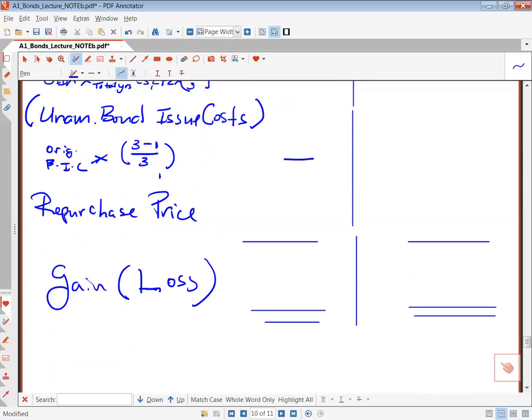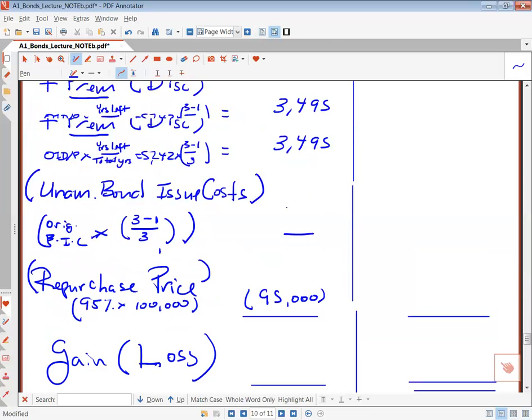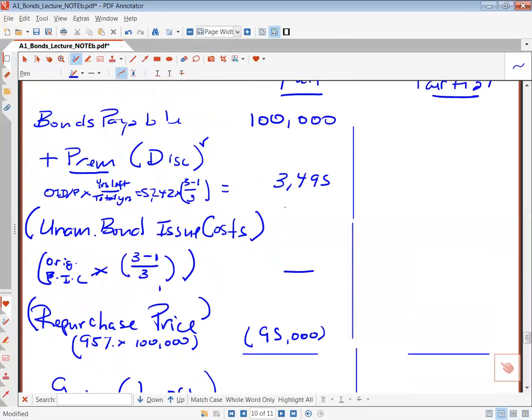And then the repurchase price for the full is just the quote, in this case, 95%, times $100,000, and it's a reduction. So let me actually, let me put this in parentheses, this in parentheses, big parentheses, this in parentheses, just to remind you that it's a reduction. All right. So you have $100,000 minus $95,000, which is $5,000 plus $3,495.